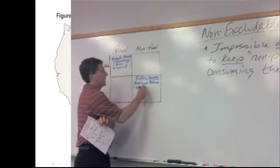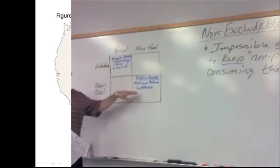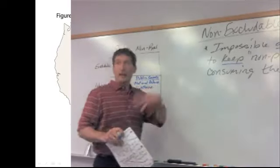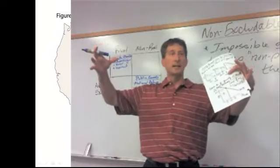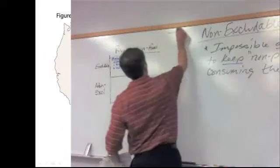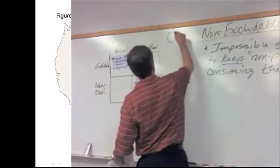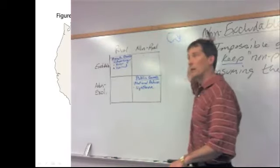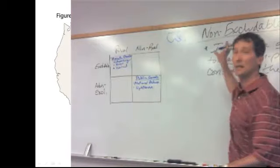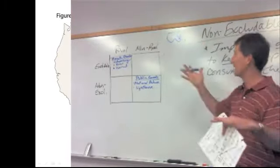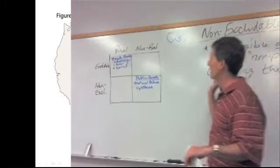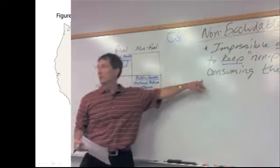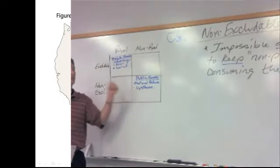A lighthouse is another classic example. The good that a lighthouse provides is light. It tells you where the shoreline is. You can imagine on our island here, we've got a lighthouse planted on Florida casting out a light to the ocean. Is it possible to exclude non-payers? No. You can see the light, anybody could be out there. So it's non-rival, there could be multiple ships out on the ocean enjoying it, and non-excludable.